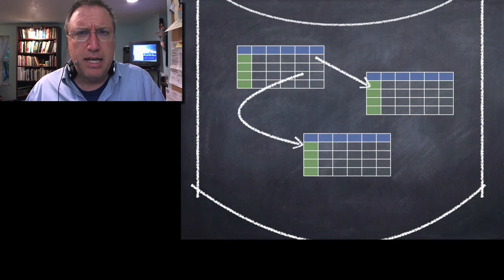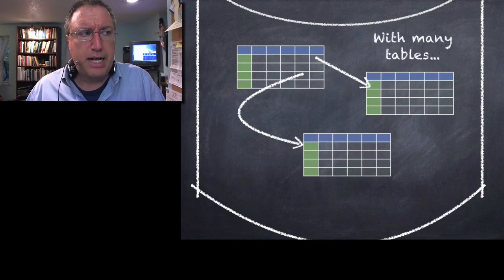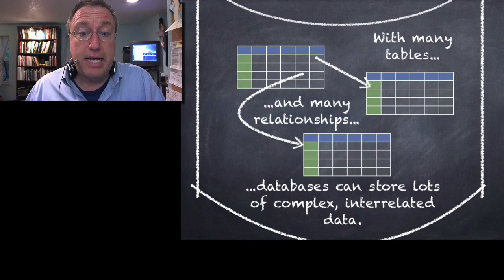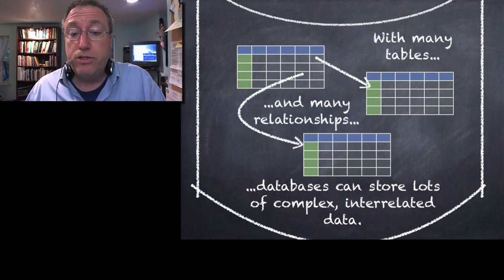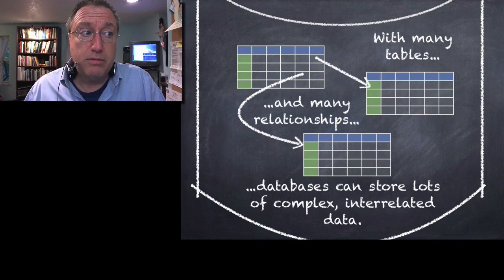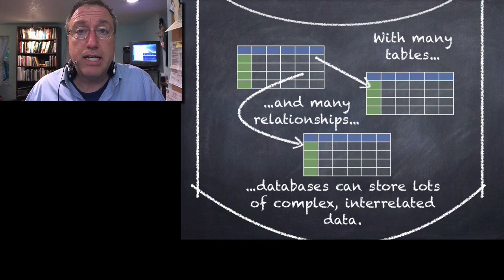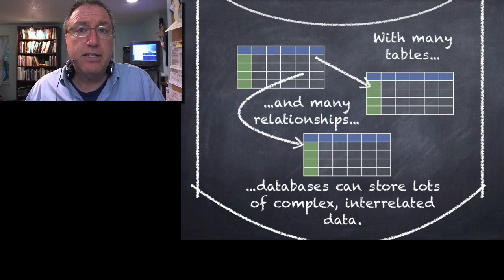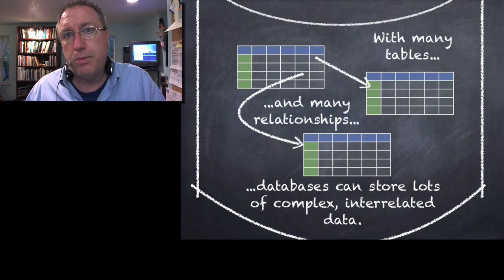The bottom line is, a relational database contains many tables connected by many relationships. And thus, it can store complex interrelated data. This organizing activity, making things into entities and organizing them into attributes and explicitly showing their relationships using keys. This is the first step in turning this data into information.